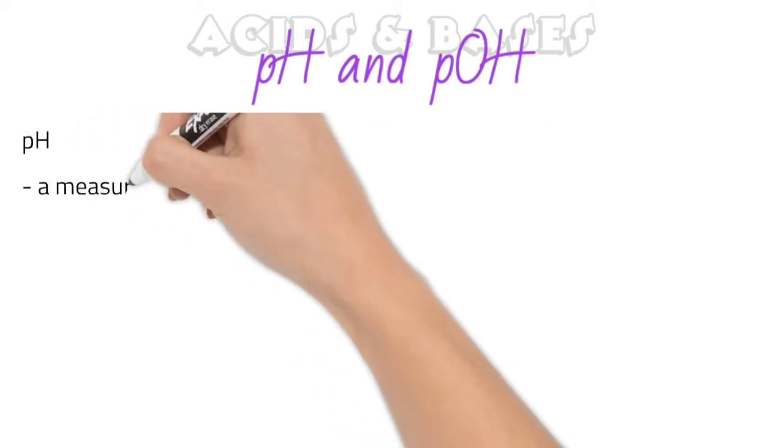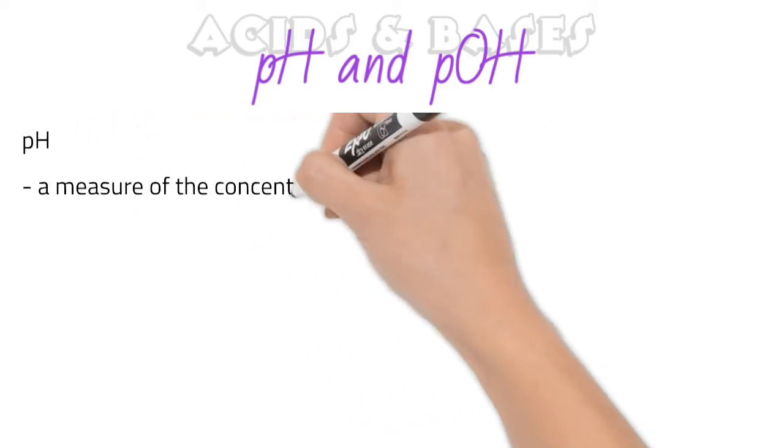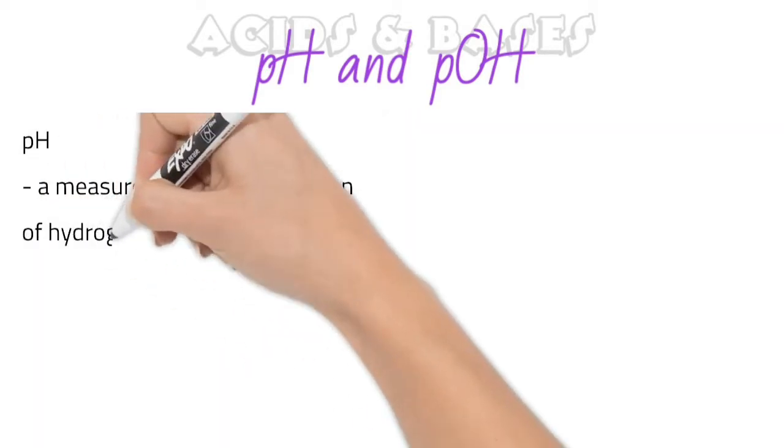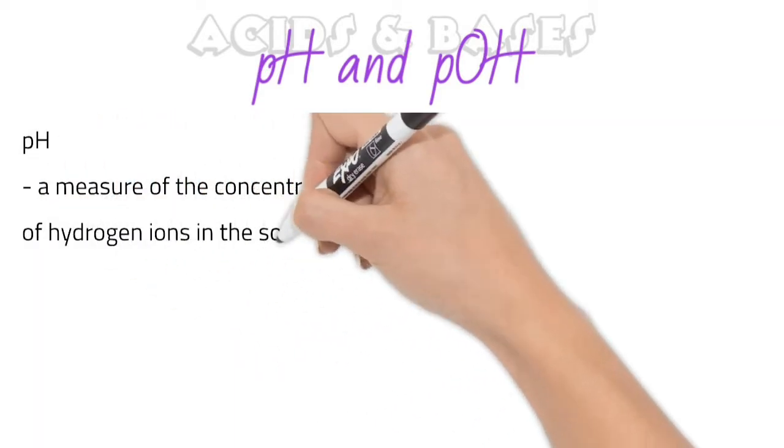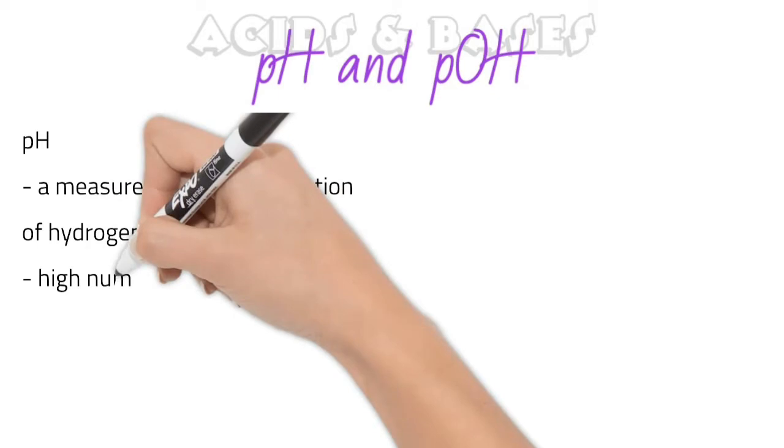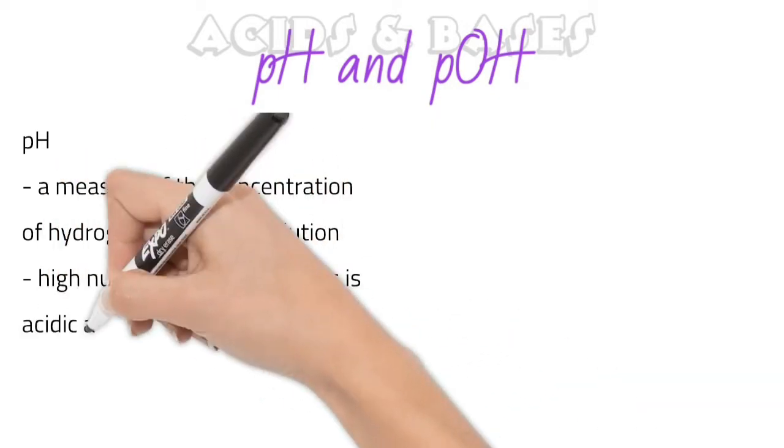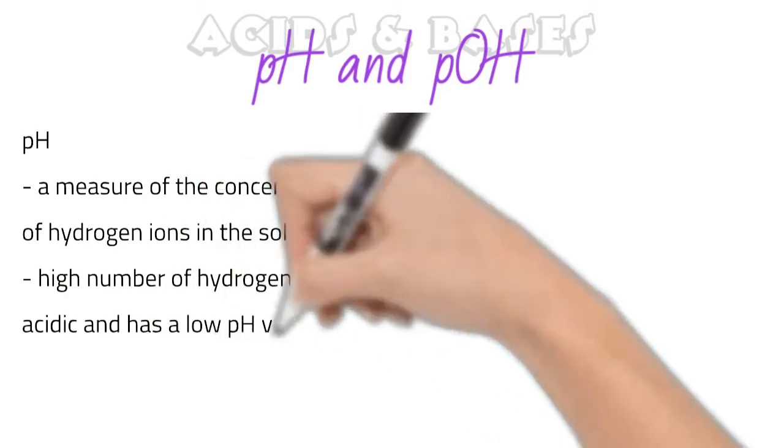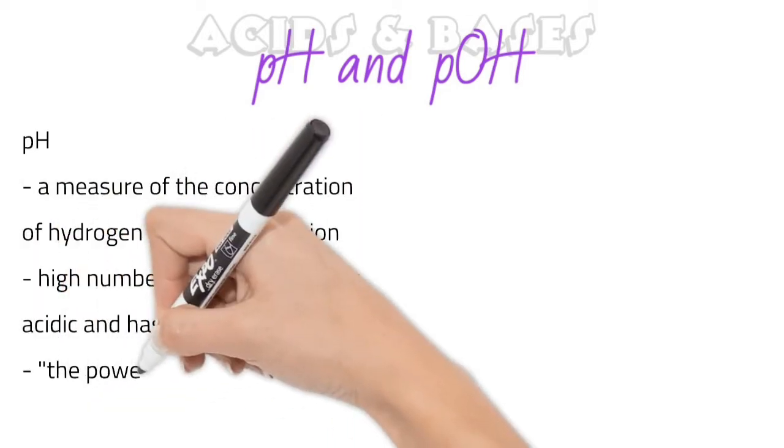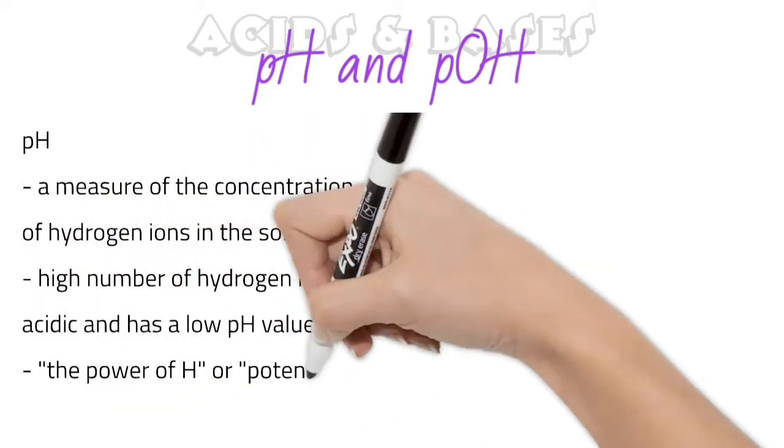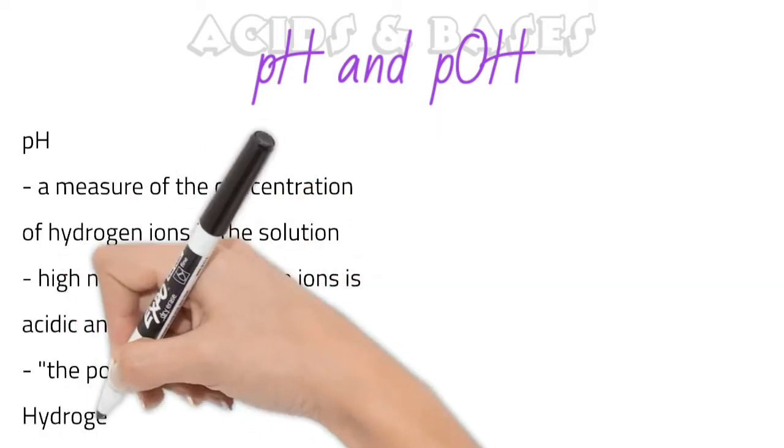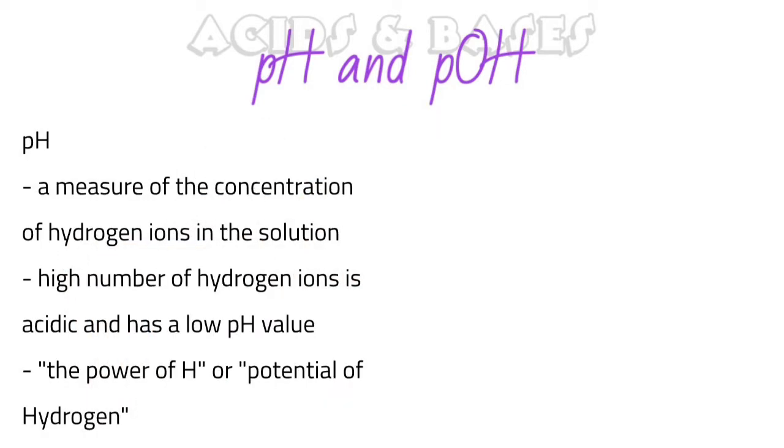The pH of a solution is actually a measure of the concentration of hydrogen ions that are in the solution. A solution that has a high number of hydrogen ions is very acidic and it will have a very low pH value. So a pH value that is less than 7 is said to be acidic. We can refer to pH as being the power of H, so power of hydrogen or the potential of hydrogen.